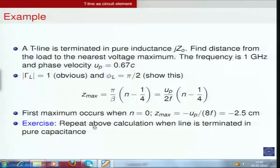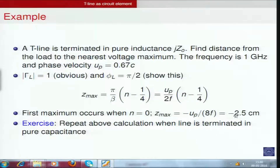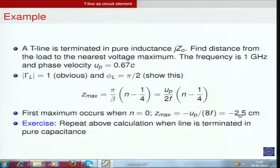As an exercise, repeat the calculation with the line terminated in a pure capacitance Z_L = -j*Z0. Find when the first maximum occurs, and also calculate when the next maximum occurs — either by setting n = -1 in the expression or by using the fact that maxima are separated by lambda/2. You can also find the first minima using the fact that the distance from maxima to minima is lambda/4.